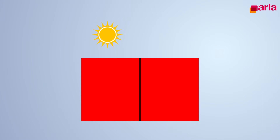When making a color judgment, it's important to evaluate under the same conditions. For example, the color of an object will look different depending on what light source you use. This is very important information when discussing and communicating colors.